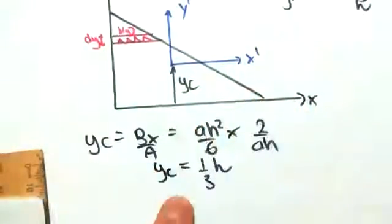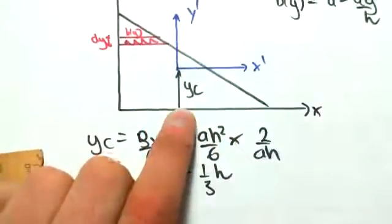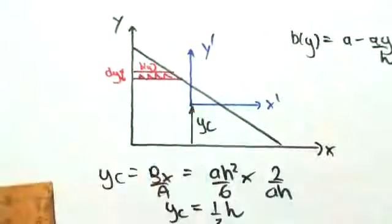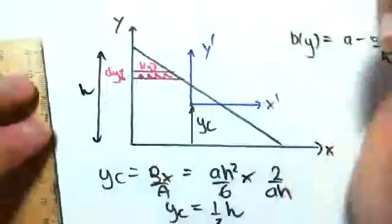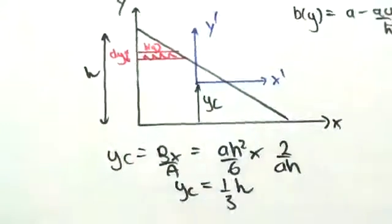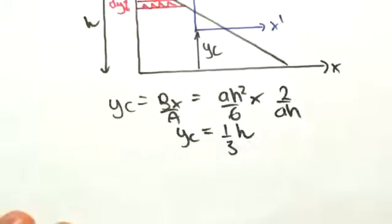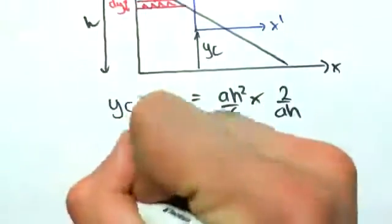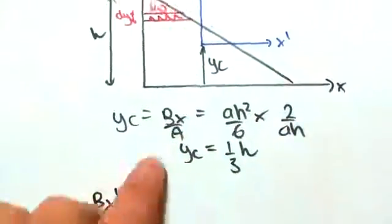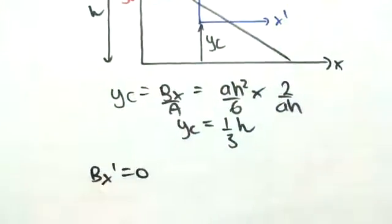So the centroid from the reference axis here is 1/3 of the height up. So that's yc. We now need to develop an equation. So first of all, we can find bx dash easily. bx dash is always 0. When you're at the centroid, the first moment of area is always 0.